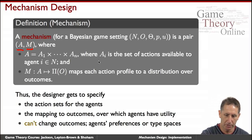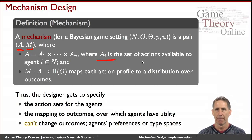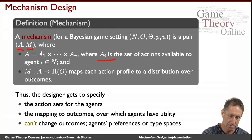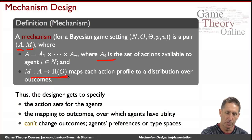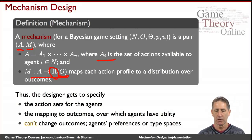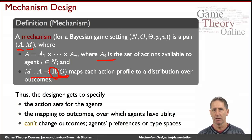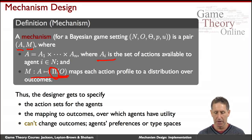Actions are a set of choices available to each agent. For example, in a voting situation, it might be to specify your entire ordering among the candidates, or just your top candidate, depending on the voting rules. And the mapping says: based on those actions — those votes — who is the winner? For technical reasons, we don't necessarily identify a single winner but a distribution over outcomes, though for intuition you can think of it as specifying a specific outcome. This is a mechanism: given a Bayesian game setting, you add these two ingredients — the actions and how they map to outcomes — and you get a Bayesian game.